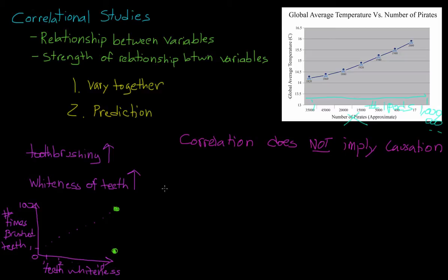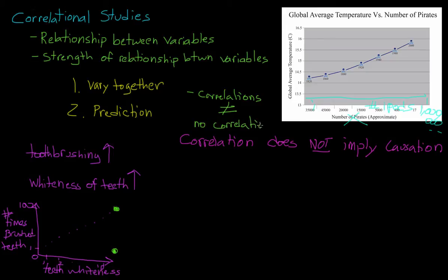So far, we've been talking about positive correlations where things vary together, or when this hill goes up. But it is also possible to have negative correlations. And before you get confused, keep in mind that negative correlations are not the same thing as no correlation. Instead, when we say that two things are negatively correlated, what we're saying is that as one variable increases, the other one reliably decreases.